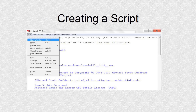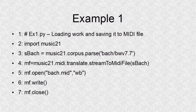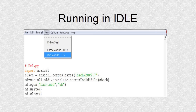To create a code script, select File and then New Window, or use the shortcut Ctrl+N. I have a seven-line program whose only function is to read one score in the corpus and save it as MIDI. Line numbers should not be typed. After typing a program and saving it, you can run it by selecting Run and Run Module. This program should write a MIDI file in the folder where the script was saved.